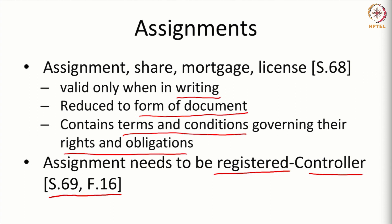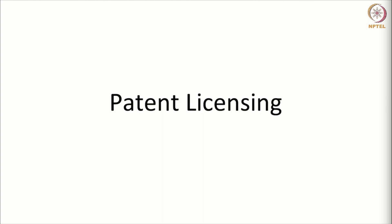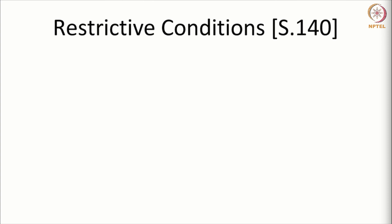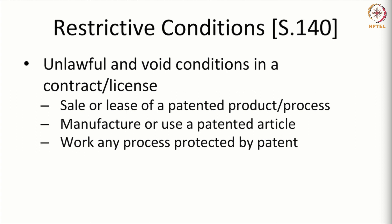These are the provisions that govern assignments; Form 16 is the form used for assignment. Patent licensing: like any other right, a patent can be licensed to multiple people or solely to one person. Sole licenses are usually called exclusive licenses. An exclusive licensee becomes a person who can exercise the rights of the owner, with rights very close to that of an owner. There are some restrictive covenants or conditions mentioned in the Act which should not be part of the license — certain unlawful and void conditions which a contract or license covering a patent should avoid.